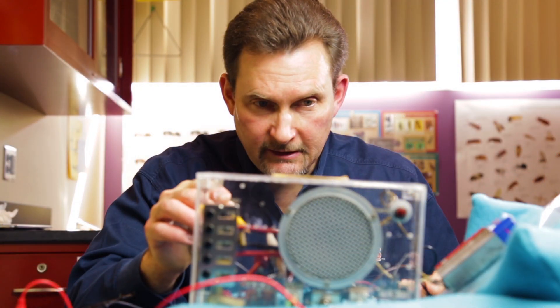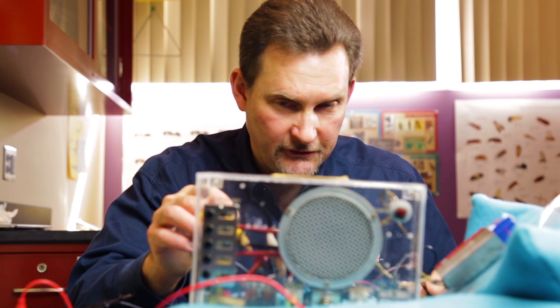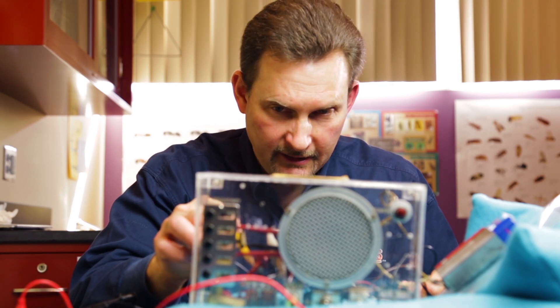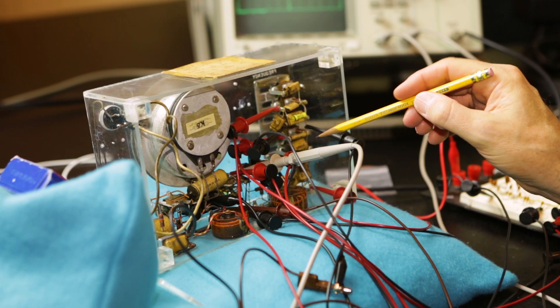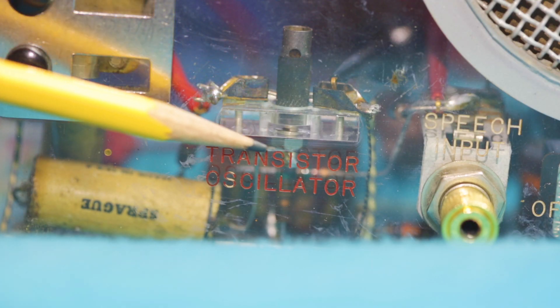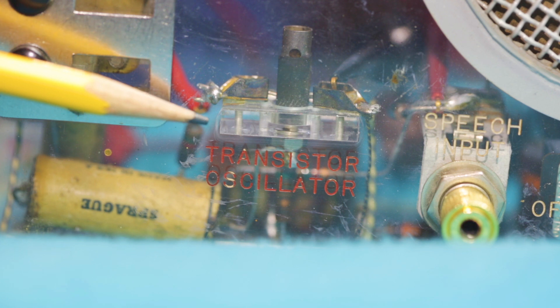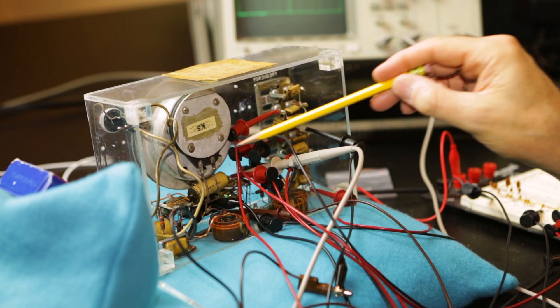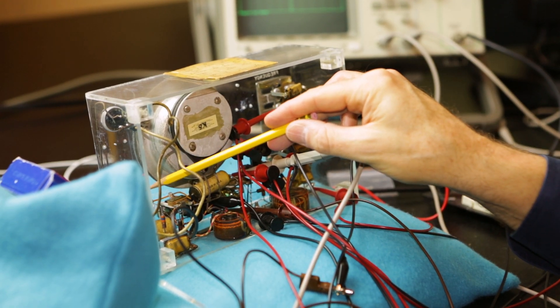There's a couple of key components to this. Obviously, the most important component is the point-contact transistor. There's two of those in here. One here, which is on the oscillator side of the circuit, and there's another one over here, which is on the amplifier side.